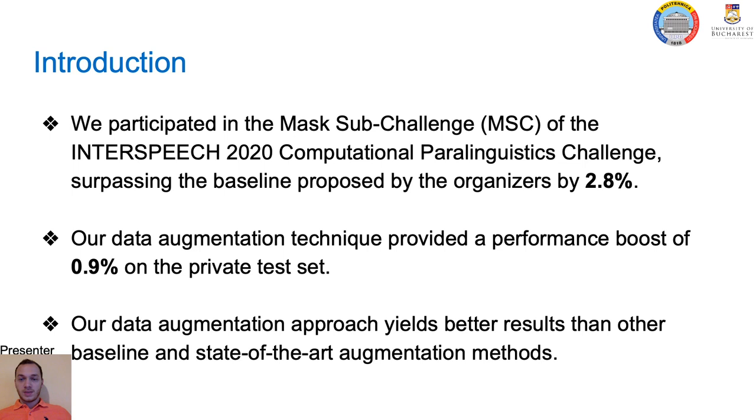With our work we participated in the Mask Sub-Challenge of the INTERSPEECH 2020 Computational Paralinguistics Challenge, surpassing the baseline proposed by the organizers by 2.8%. Our data augmentation technique provided a performance boost of 0.9% on the private test set. Furthermore, we showed that our data augmentation approach yields better results than other baseline and state-of-the-art augmentation methods such as speed perturbation or spectral augmentation.